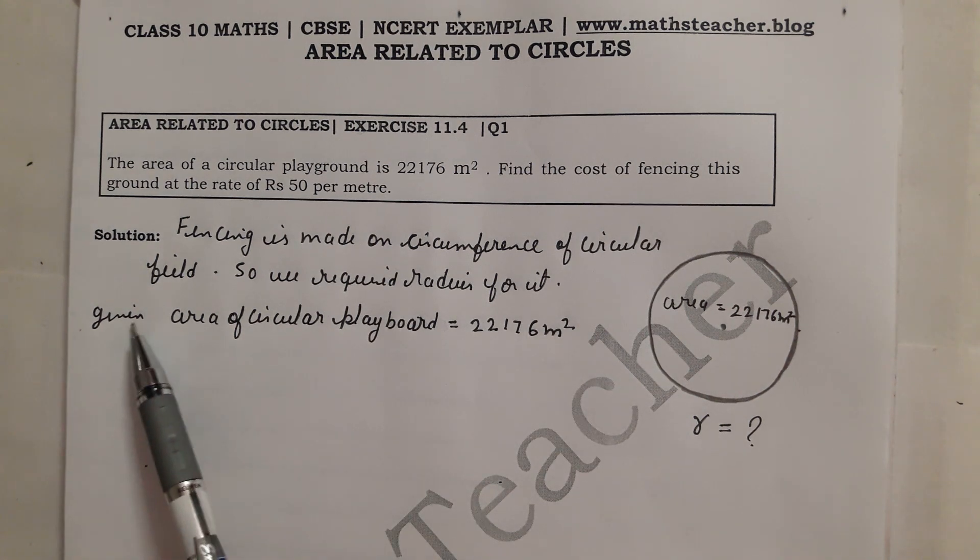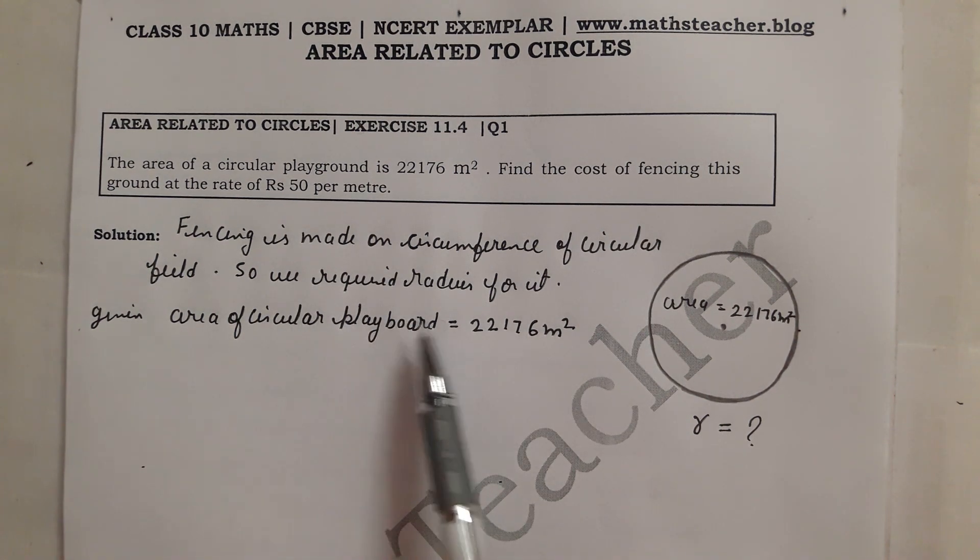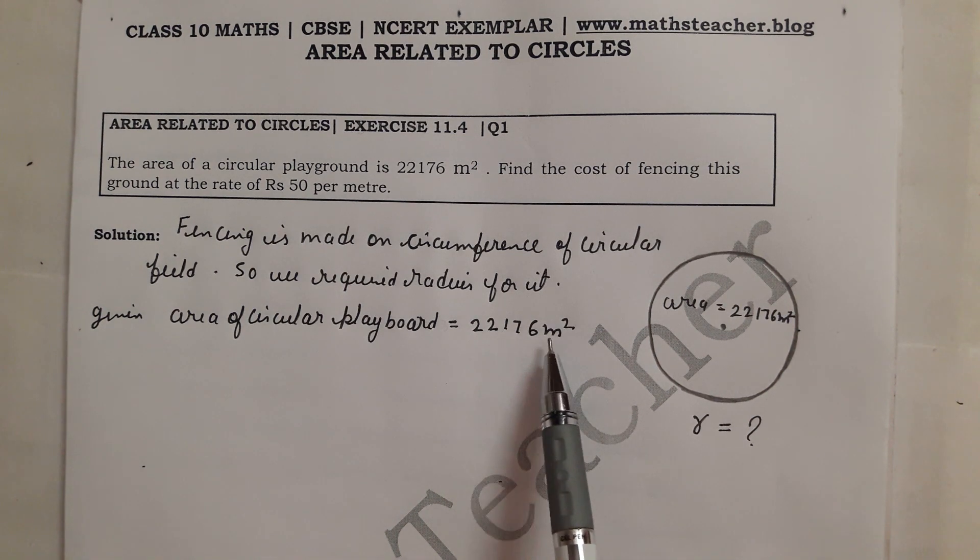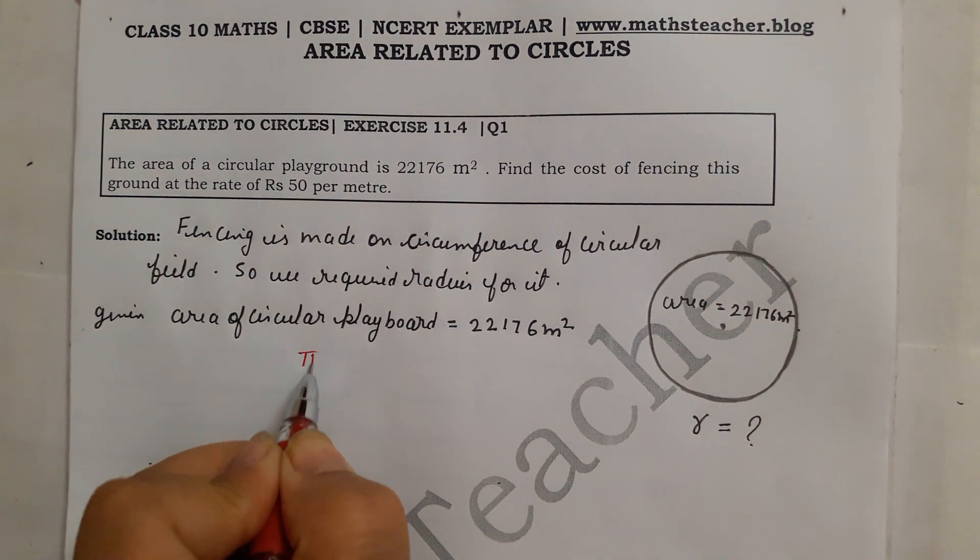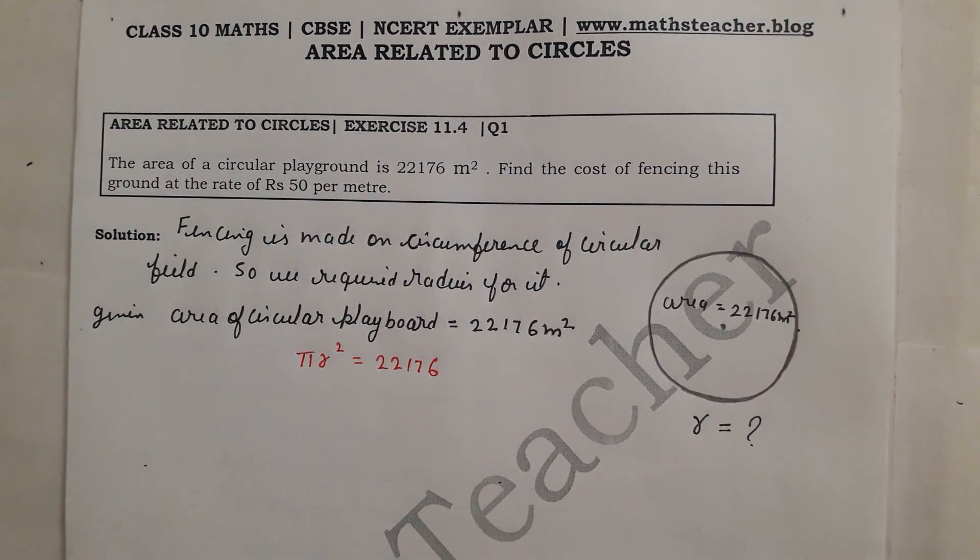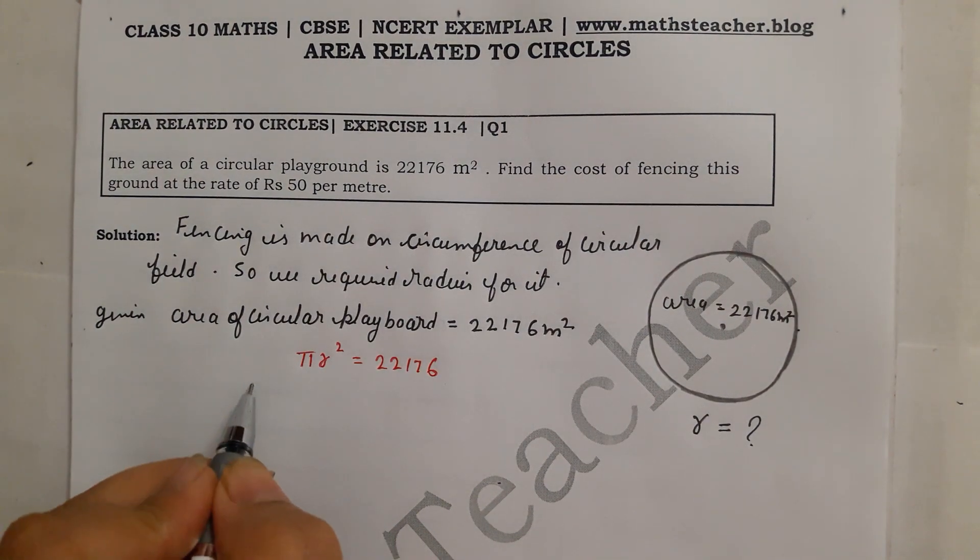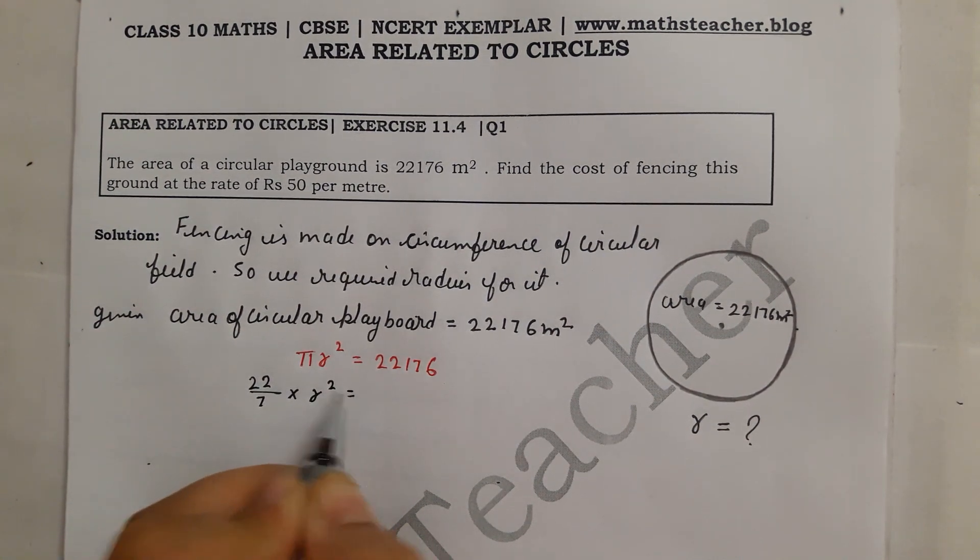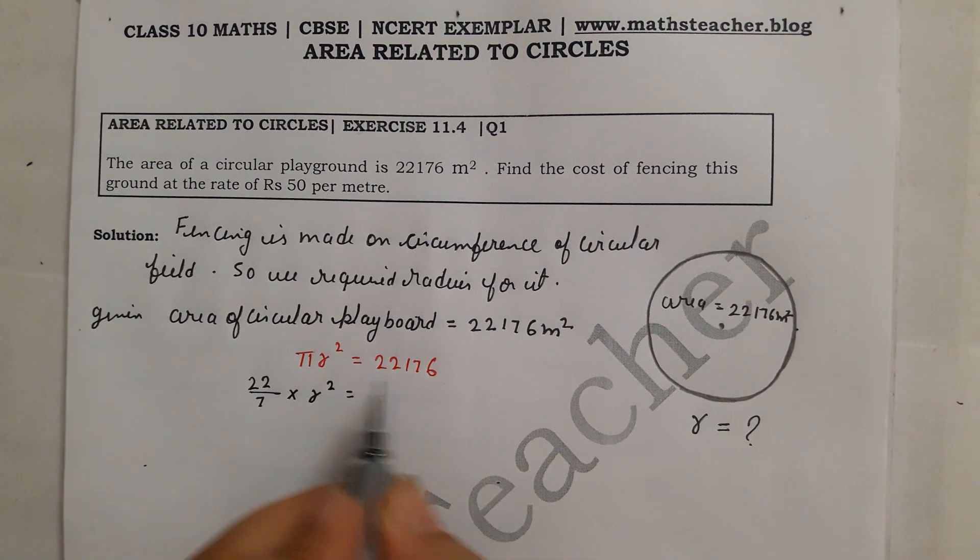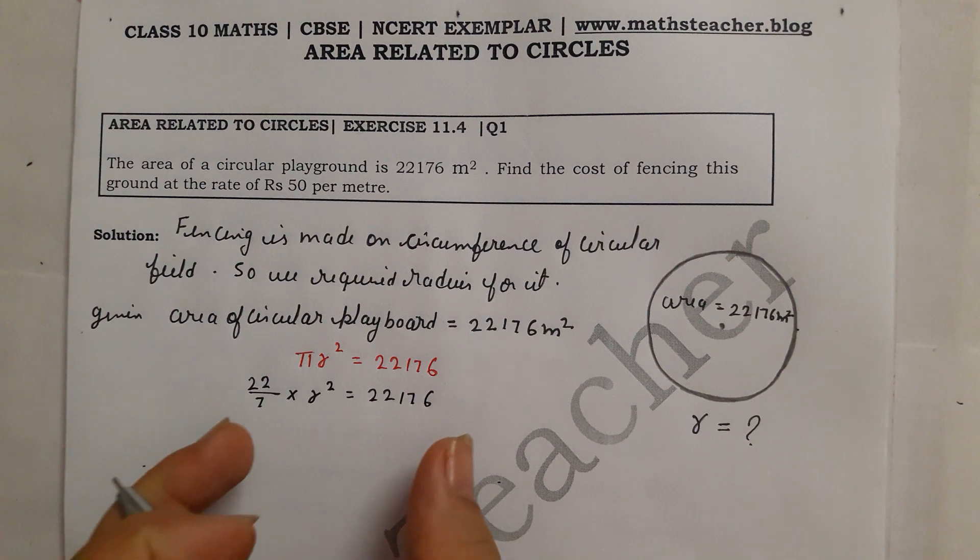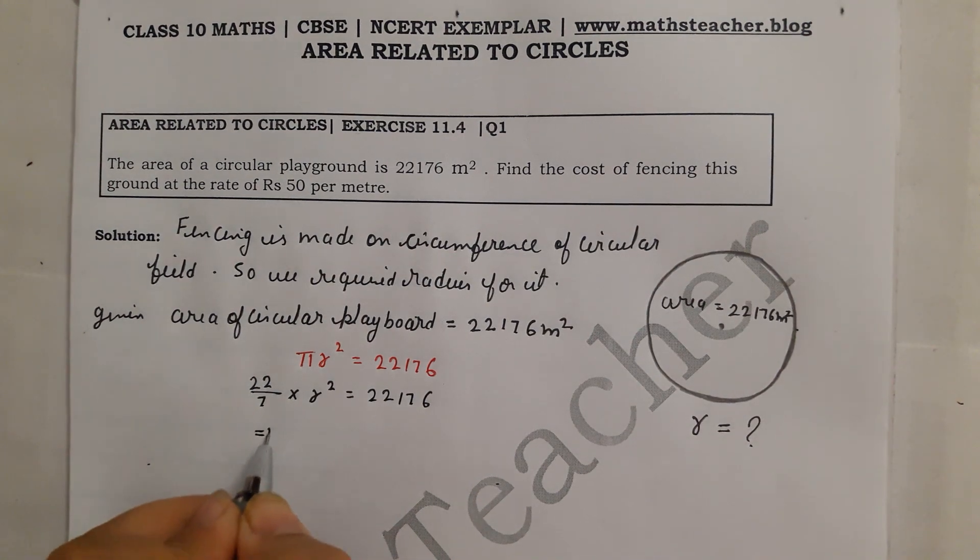The question is given that the area of the circular playground is 22,176, so the formula for circular area is pi r square. So we have put the values here in the formula. We know the value of pi - the question is not given, so you can also put 22 by 7 or 3.14.